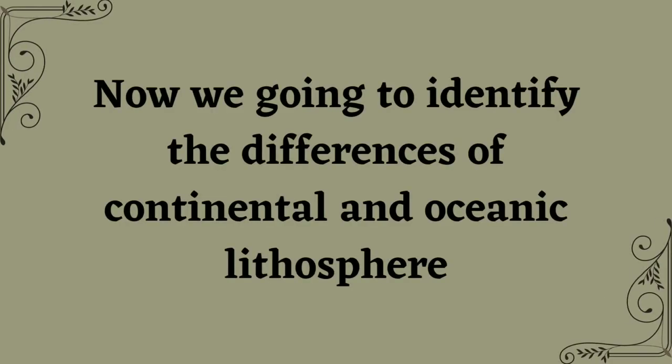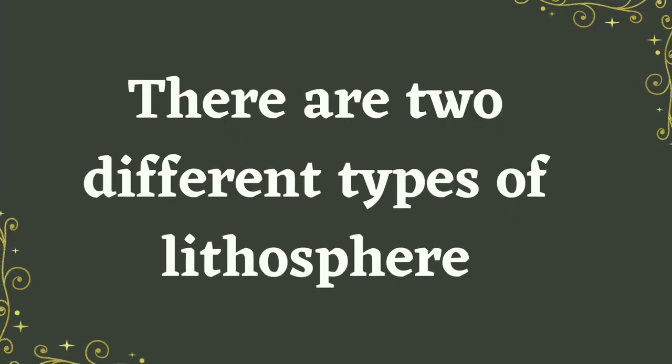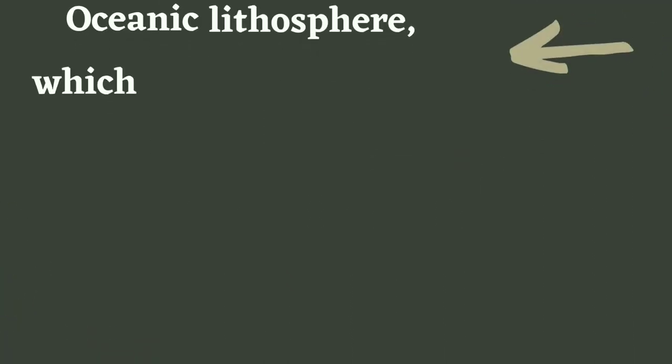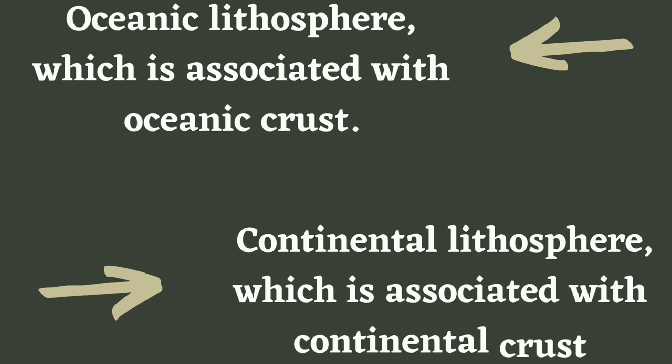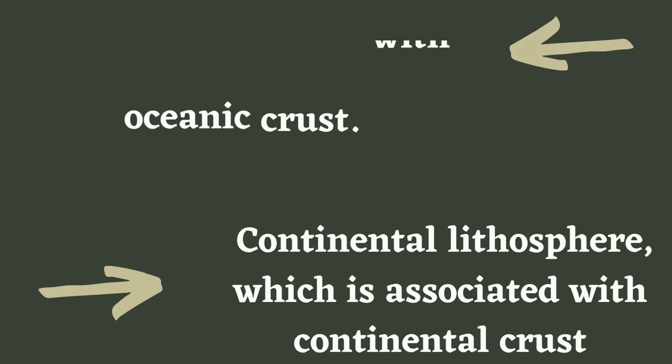Now, we are going to identify the differences of continental and oceanic lithosphere. There are two types of lithosphere: oceanic lithosphere, which is associated with oceanic crust, and continental lithosphere, which is associated with continental crust.